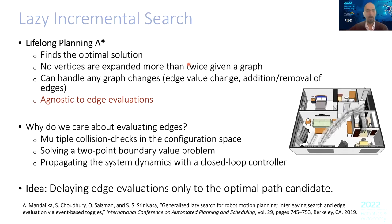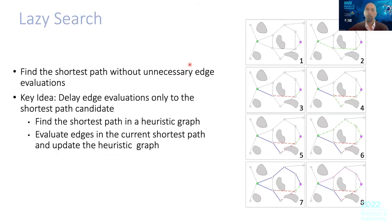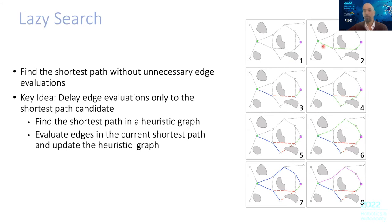The idea of lazy search has been around for a couple of years — it delays edge evaluations until the last minute. You want to go from the start (green) to the goal (magenta), and you solve the problem as if there are no obstacles. When you find what seems to be the best path, you then check only along this path for collisions. If there are no collisions, you're done. If there are collisions, you eliminate the edge where the collision occurred and replan. You keep doing that until you find the optimal path.